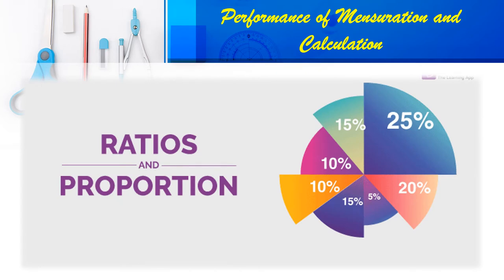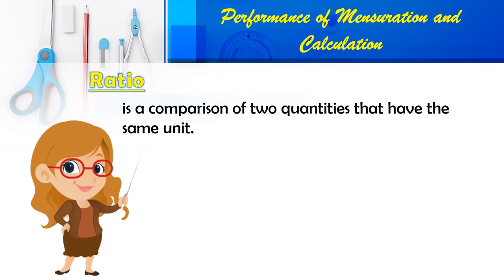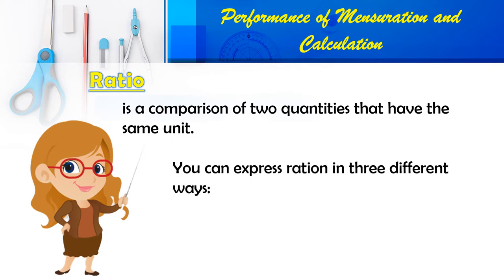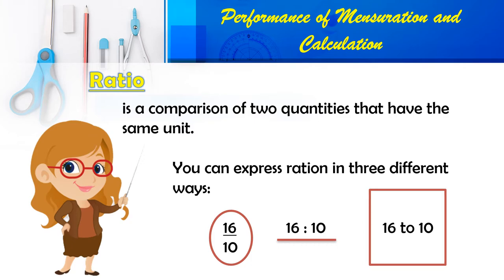Let us now proceed to ratios and proportion. A ratio is a comparison of two quantities that have the same unit. Ratio can be expressed in three different ways: as a fraction using a bar separator (e.g., 16/10), using a colon (16:10, read as '16 is to 10'), or using the word 'to' (16 to 10).